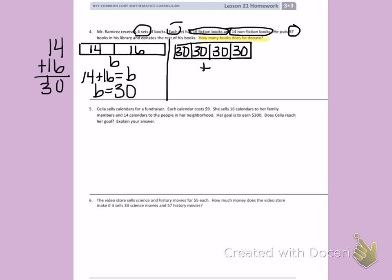When I look at this tape diagram, I notice I have equal parts, because I have the same number in each part. I have 4 equal groups of 30 books, which is going to give me T. When I multiply 4 times 30, I get 120.